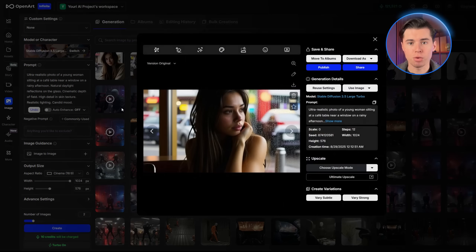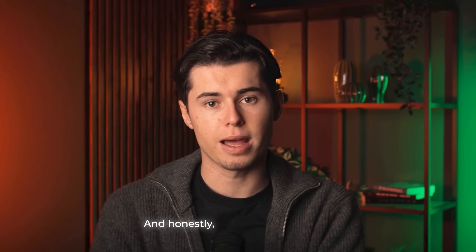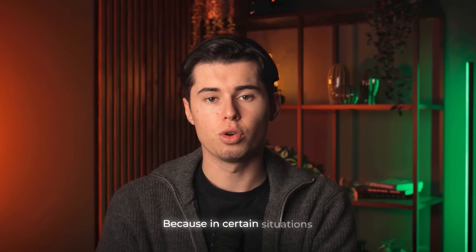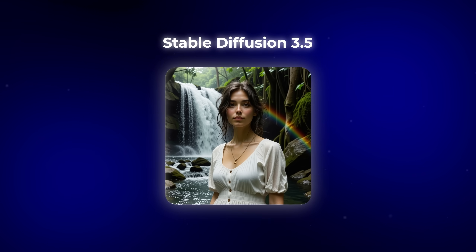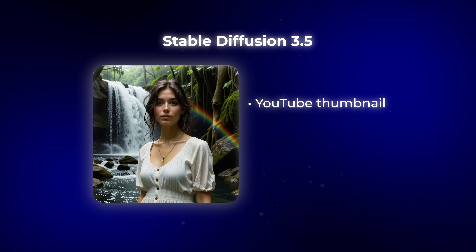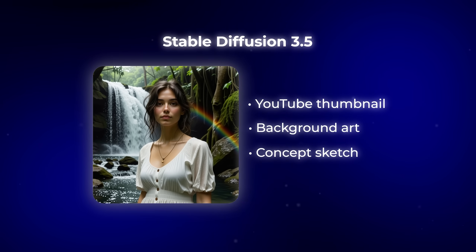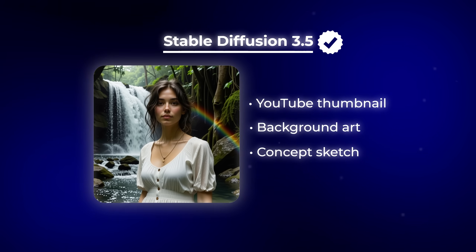Looking at the first batch of images, you can immediately see the difference. These don't look fully real — they don't have the same photoreal sharpness and cinematic detail that Juggernaut gave us. Instead, they look a little more like a stylized render, almost painted or drawn. And honestly, that's not a downside. In certain situations, this look is exactly what you want. If your goal is to create an image for a YouTube thumbnail, background art, or a concept sketch, Stable Diffusion 3.5 gives you that perfect balance of realism and creativity.